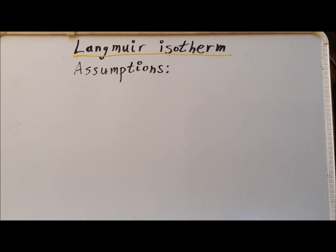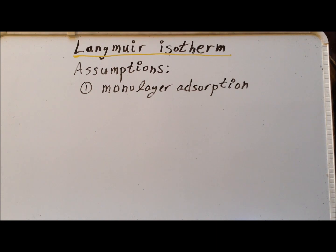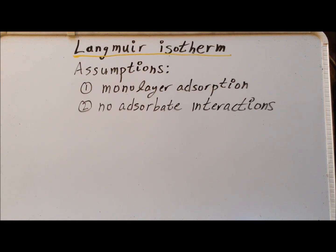Implicit in the Langmuir isotherm are a number of assumptions. The first assumption is monolayer adsorption, which means we can either have the solid surface with no gas molecules, or exactly one gas molecule at a particular site. We cannot have gas molecules piled one atop each other. The second assumption is that there are no adsorbate-adsorbate interactions. This means once the gas molecules have stuck to the surface, they have no effect on any neighboring gas molecules stuck to the surface, and they also do not affect any incoming gas molecules.